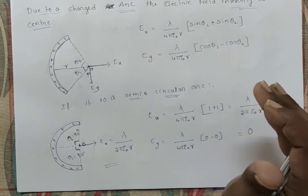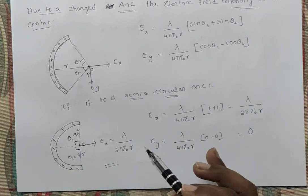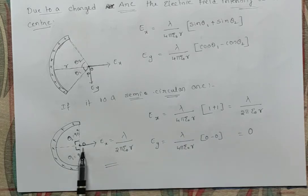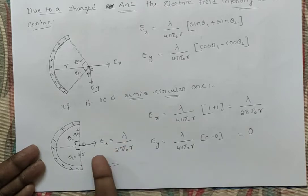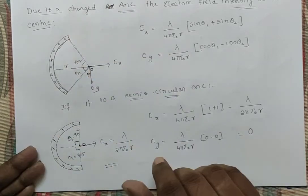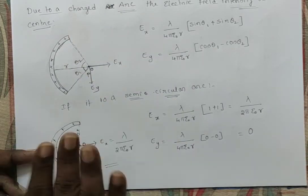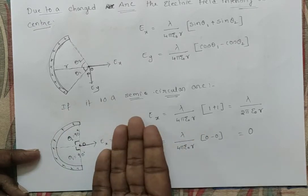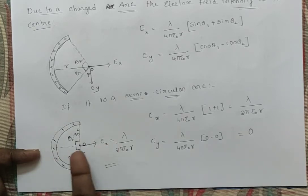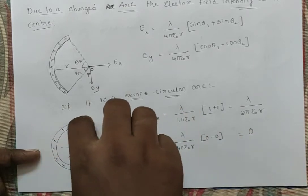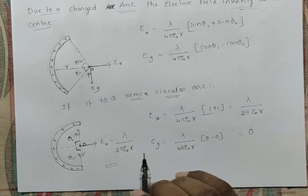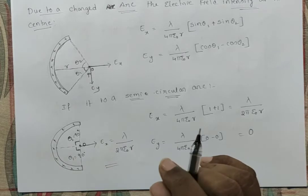For a complete circle, the left half produces an electric field to the right, and the right half produces an equal electric field to the left. These cancel each other, so the net electric field intensity due to the complete ring is 0 — consistent with what we discussed earlier that at the center E = 0.